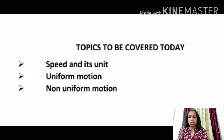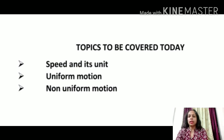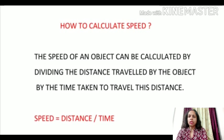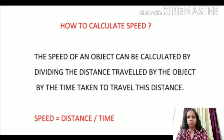If a car runs slow, we say that its speed is low, and if a car runs fast, we say that its speed is high. So, speed of an object gives an idea about how fast or slow an object is moving. The speed of an object is the distance covered by the object in unit time. So, the speed of an object can be calculated by dividing the distance covered by the object by the time taken to travel that distance. The formula for calculating speed is: speed = distance / time.